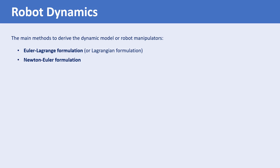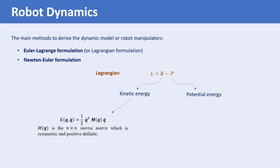To use Lagrangian formulation, we first need to form the Lagrangian of the system, which is defined as the kinetic energy minus the potential energy of the system. The kinetic energy is a quadratic function of the joint velocities and is equal to one-half q-dot transpose times m of q times q-dot, where m is the n-by-n inertia matrix, which is symmetric and positive definite.